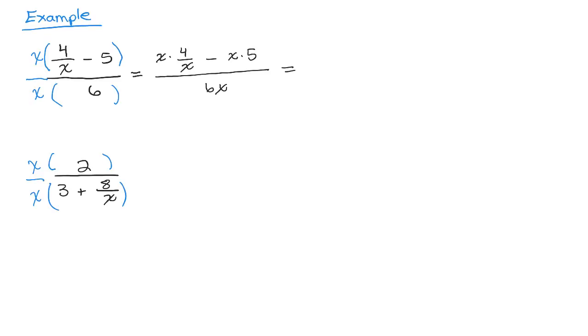So remember, the reason we multiply by the least common denominator is so these will cancel. That's what's cool about method 2. You get rid of your complex fraction right after you do the distributive property. So I have 4 minus 5x over 6x. And that's our answer.